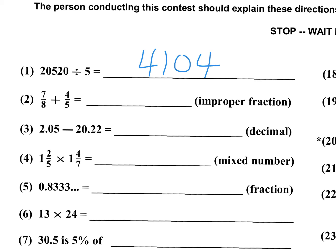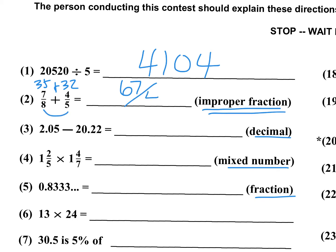For number two, the answer has to be written as an improper fraction because that's what's specified. In all of these, you have to be careful on the right side of the answer blank about what form is required. For number two, I would do a cross product: seven times five is 35, eight times four is 32. Add those two — that's 67 — over the denominator, which is eight times five, which is 40. I'm writing these here just to show the explanation; you're not allowed to write on the problem itself.